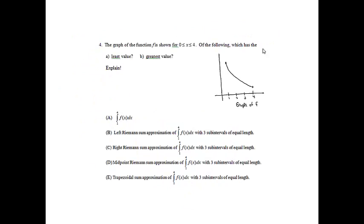Number 4. The graph of the function f is shown for x between 0 and 4. Of the following, which has the least value and which has the greatest value? I know the actual integral from 1 to 4 gives the true area under the curve, so it's definitely not going to be the least or the greatest — it's the actual value.